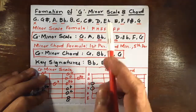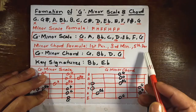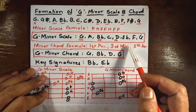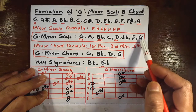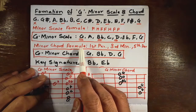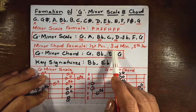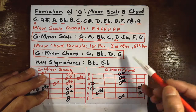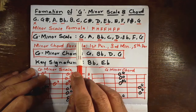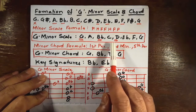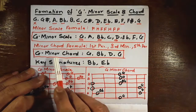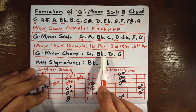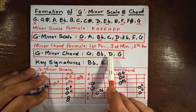The G minor scale has been completed. Now to derive the G minor chord, we need to apply the minor chord formula to the minor scale. The minor chord formula is: first perfect, third minor, and fifth perfect. Applying this formula to the G minor scale, we get G, B flat, and D.